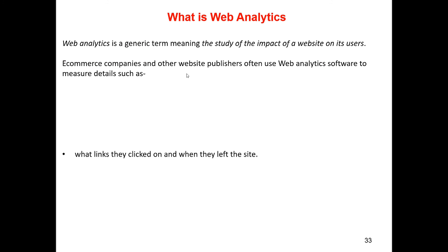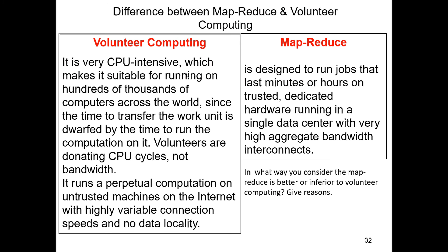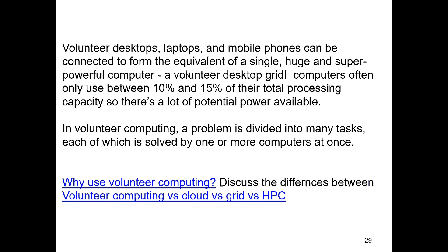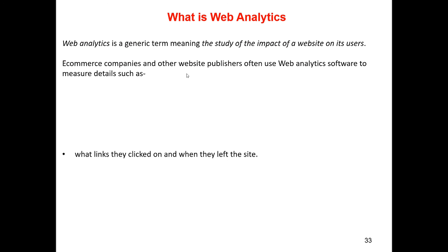Before moving to web analytics, an important clarification: all cluster computing and HPC come under the MapReduce category. The cloud is a platform for online storage — whether it is MapReduce, Hadoop, cluster computing, or grid computing, the cloud is a virtual storage space for all these technologies. Volunteer computing may or may not use cloud support, since it is abundantly provided with large storage resources.